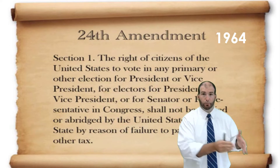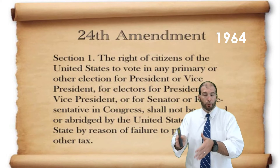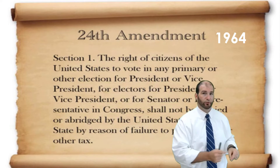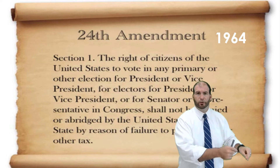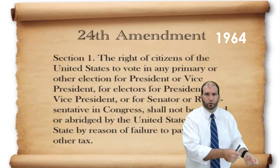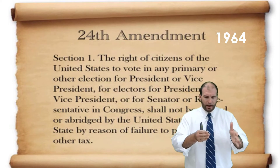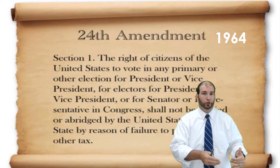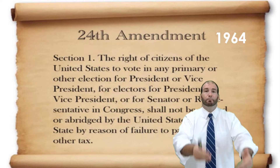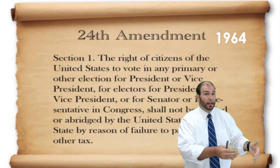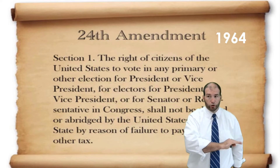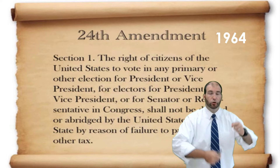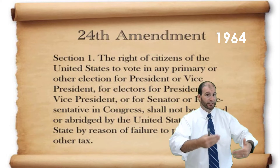What had been happening in the South was the creation of poll taxes — to vote for the president or any office, you had to pay a tax. That already negatively impacted Black people because they weren't allowed the same jobs or pay as white people, making them the poorest part of the population. To make it even worse, the South added things like the grandfather clause: if your grandfather could vote, you didn't have to pay the poll tax — and only white people's grandfathers could vote.